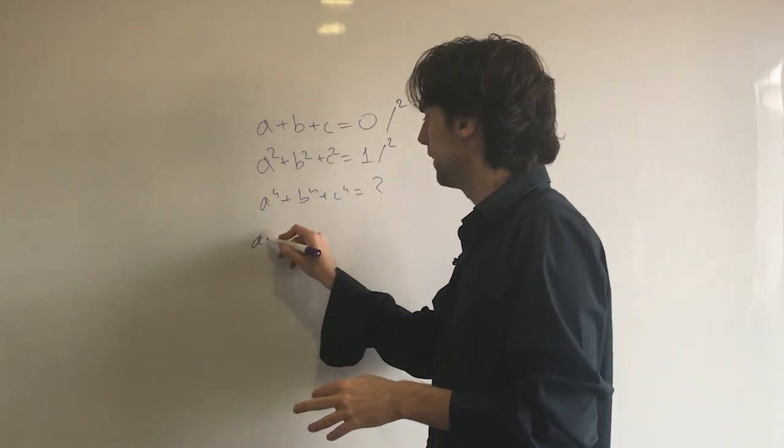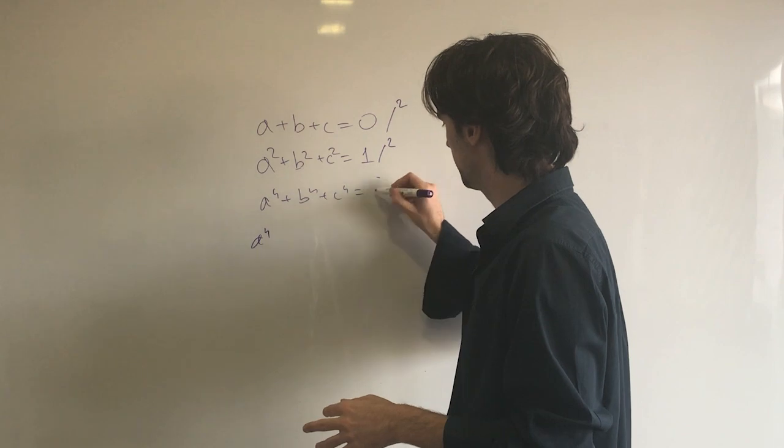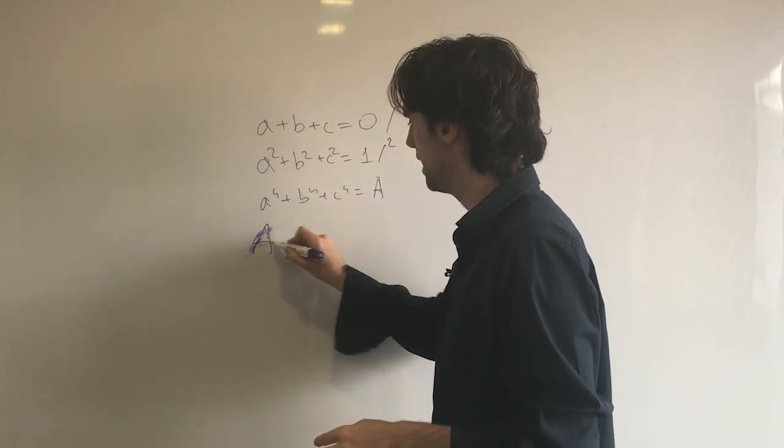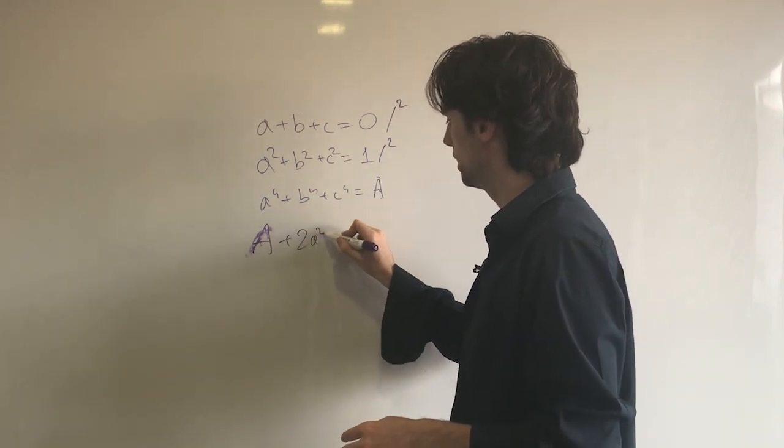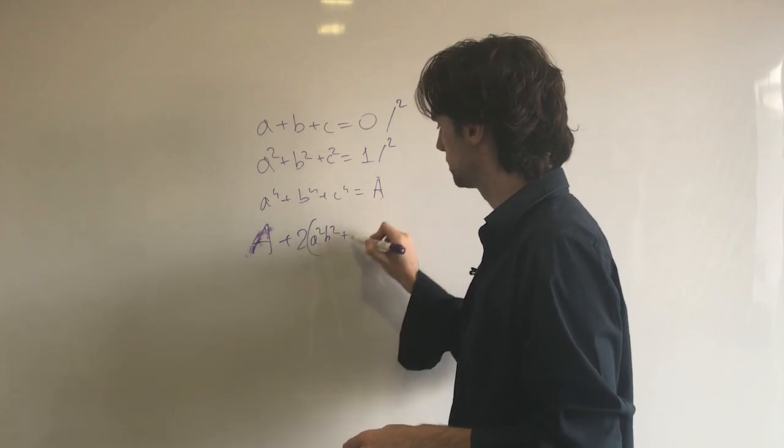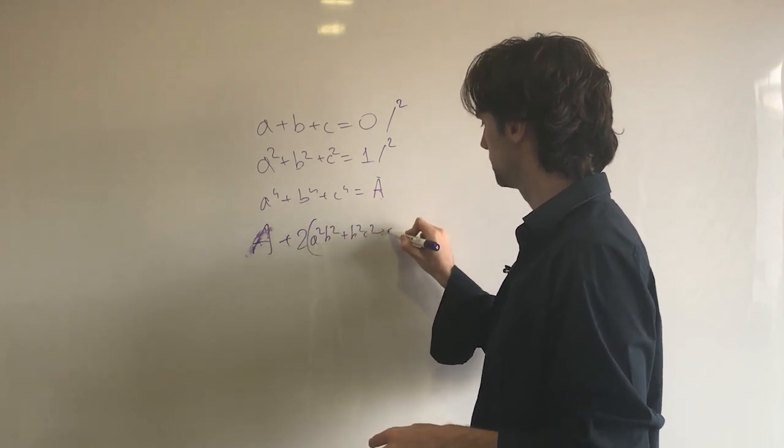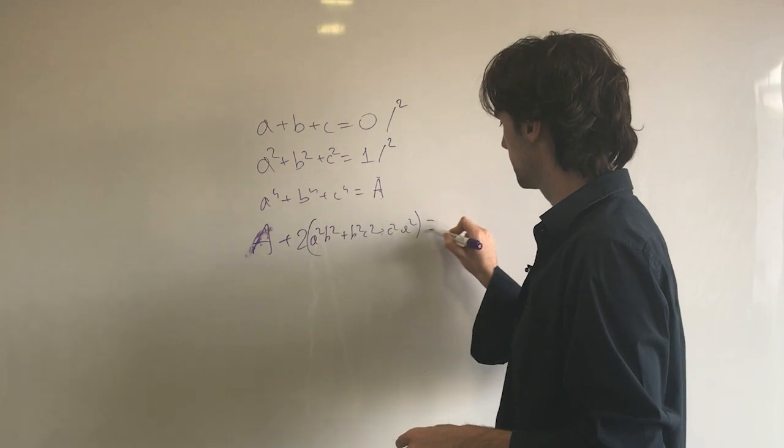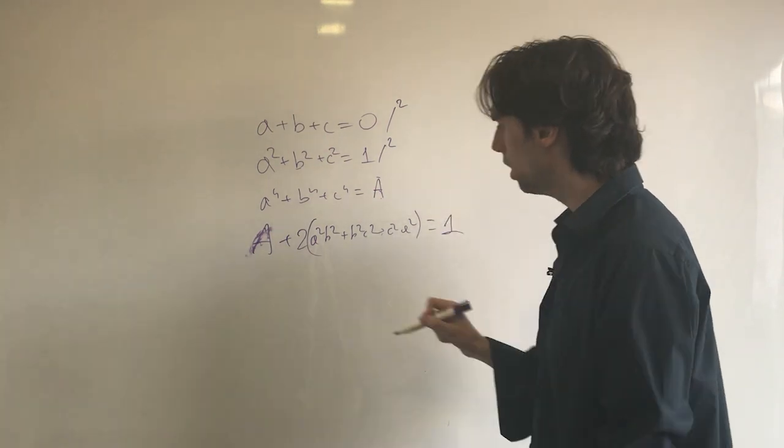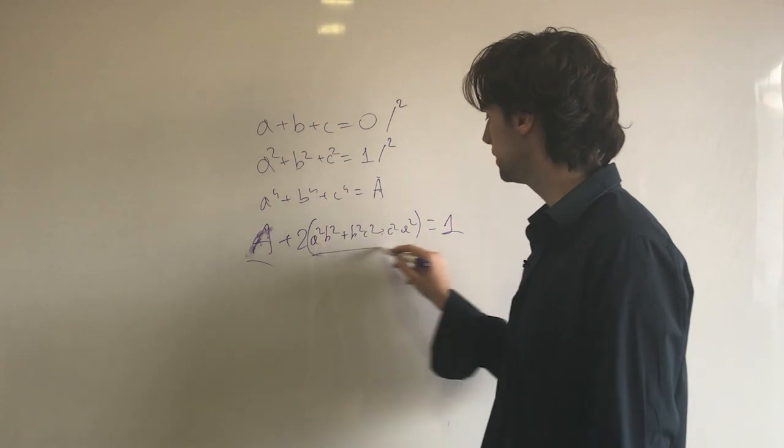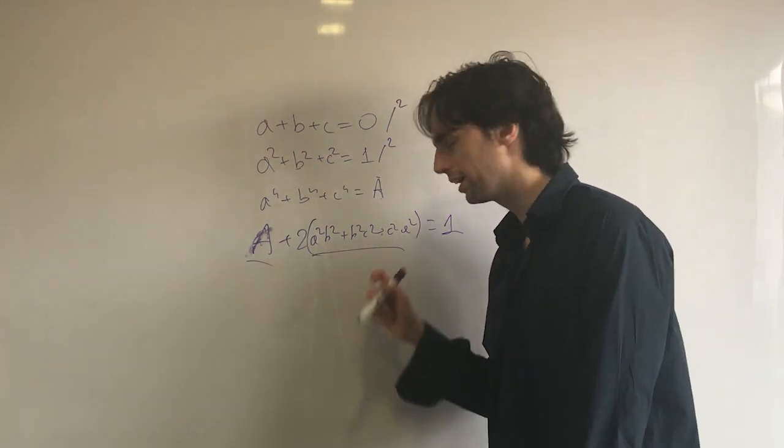Let's call what we're looking for capital A. So we have A + 2(a²b² + b²c² + c²a²) = 1. To figure out what A is, we need to figure out what this middle term is.